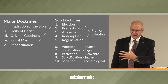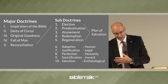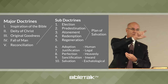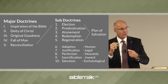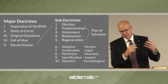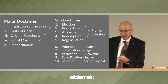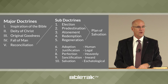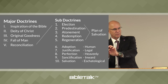Then the last five — adoption, justification, perfection, sanctification, and salvation — these last five explain the plan of salvation from five different perspectives. Adoption explains it from a human perspective. Justification from a legal perspective. Perfection from a heavenly perspective. Sanctification from an inward perspective. And the final one, the sub-doctrine of salvation, explains it from an eschatological perspective, meaning it studies it from a completion perspective.